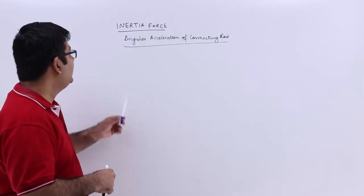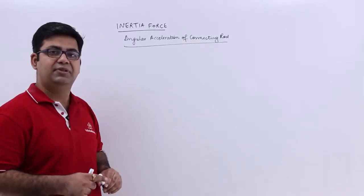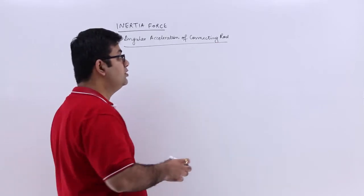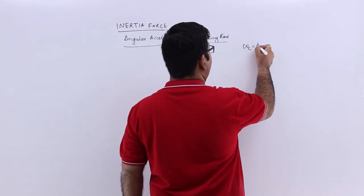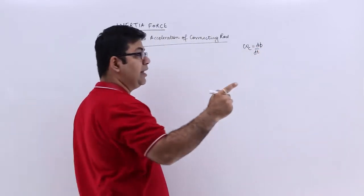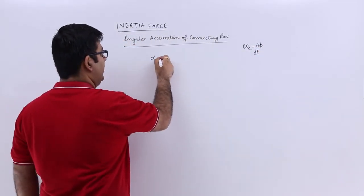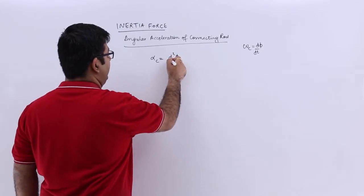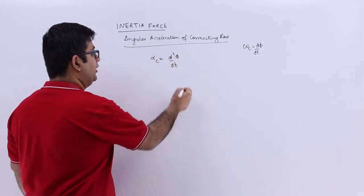Now let's talk about the angular acceleration of the connecting rod. The angular velocity was omega_c, which was d(phi)/dt. So the angular acceleration alpha would be the double differential, d²(phi)/dt².